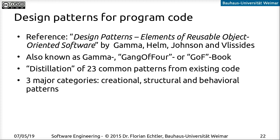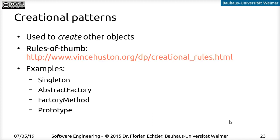The patterns have been grouped into three categories: creational, structural, and behavioral patterns. Today we're going to talk about the creational ones first. The idea behind those is that we want to create other objects, and some of the examples I'd like to discuss today are the singleton, the abstract factory, the factory method, and the prototype. On this webpage here, you can find some background reading about how these patterns relate to each other, and we're also going to cover that in the rest of this lecture.